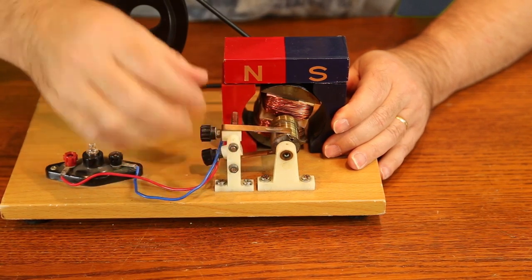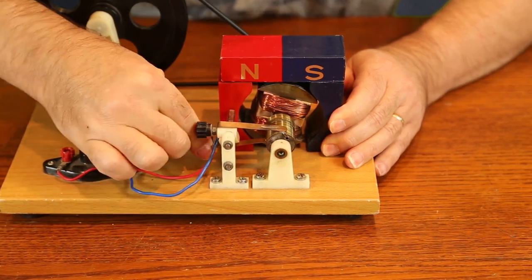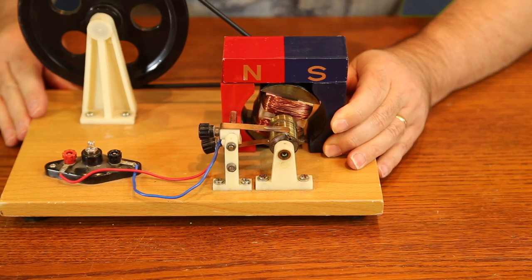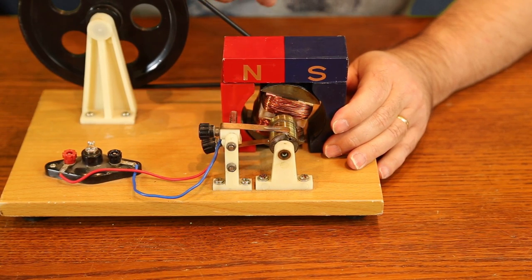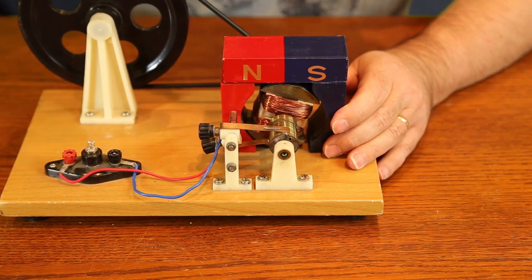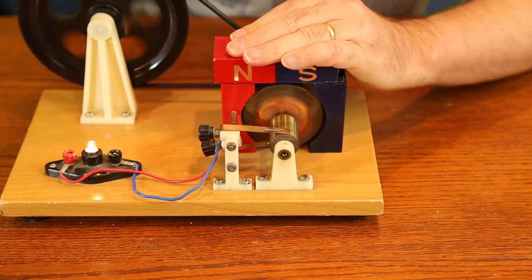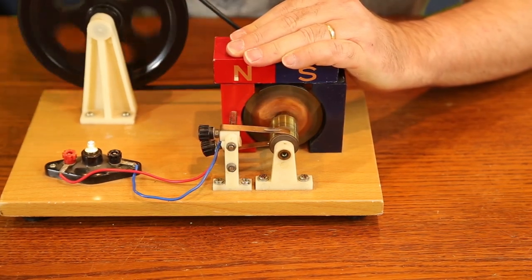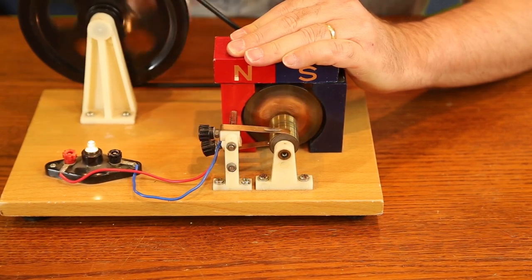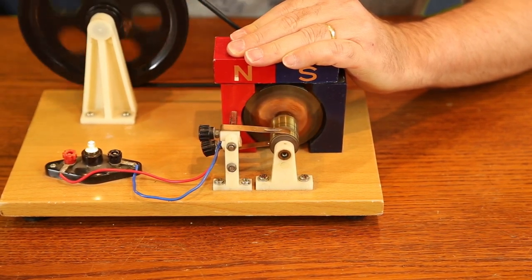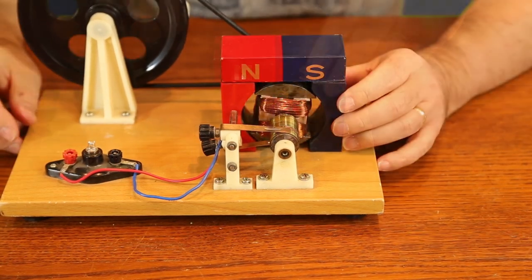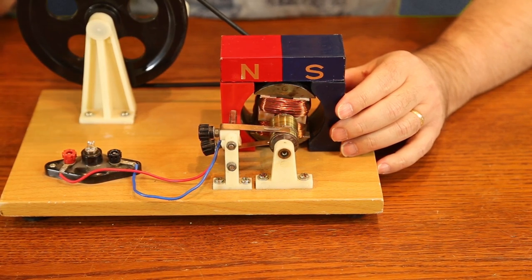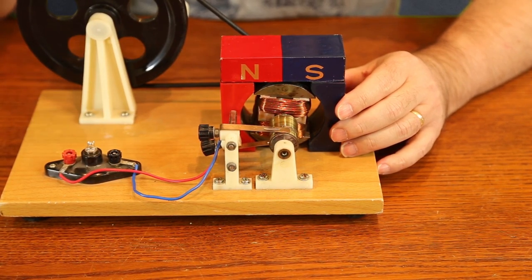If I change my commutator to be a slip ring commutator, then the alternating current due to the alternating EMF is going to continue to go to my bulb. So now my bulb is blinking because of the alternating current. So there are the basics of a motor and a generator. One relies on the motor effect and one relies on Faraday's law.